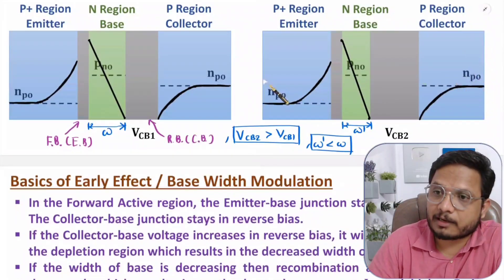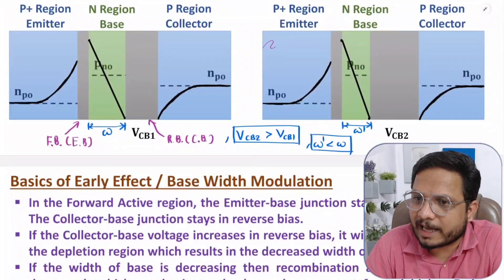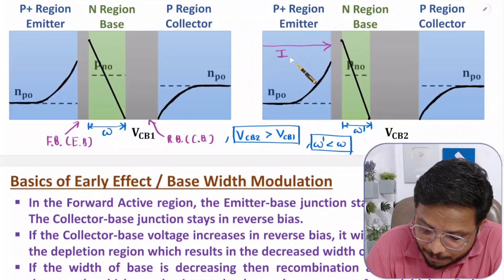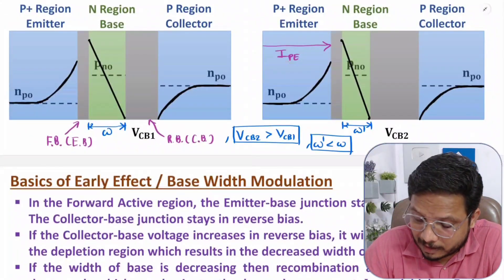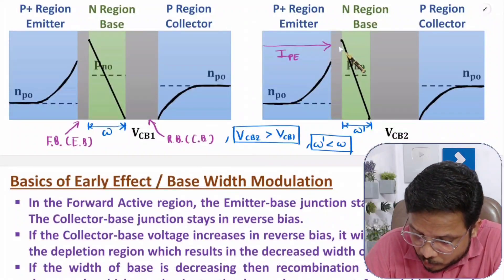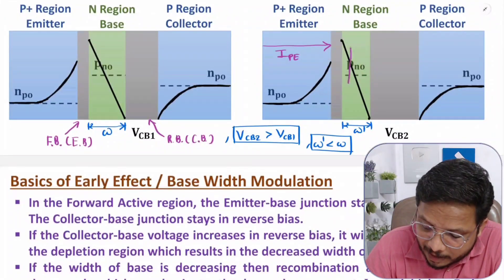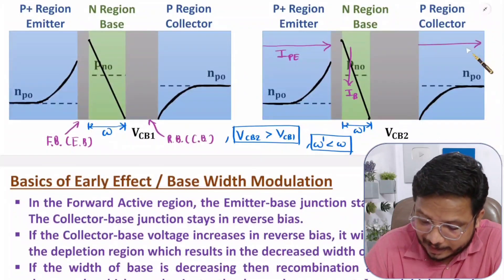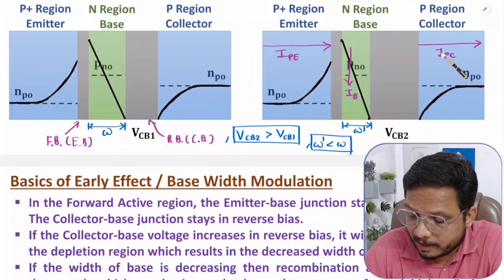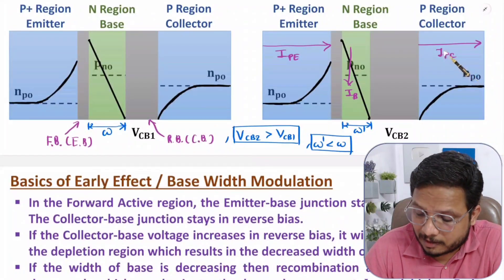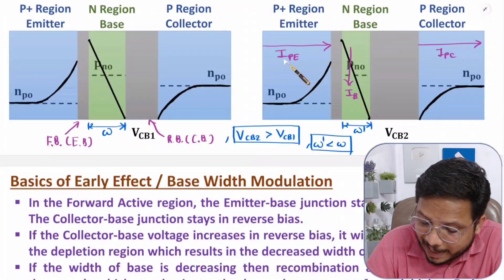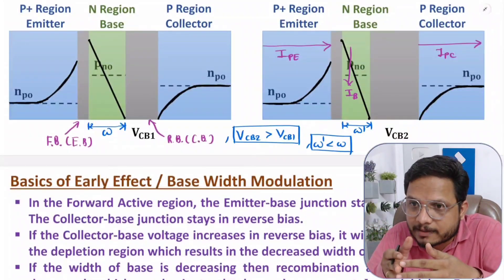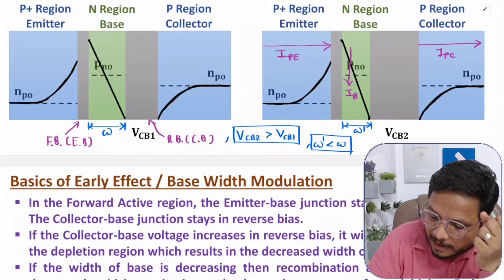In a PNP transistor, current flows due to majority carriers — holes. Holes are injected at the emitter, giving emitter hole current IPE. When this current reaches the base, some recombination occurs, causing base current IB to flow. The remainder reaches the collector as IPC — current due to holes in the collector. So IB = IPE − IPC, and it flows because of recombination at the base. Now as the base width is decreasing, recombination decreases.